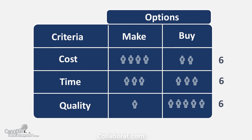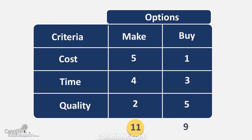Voting involves asking each team member to cast their vote for each of those options, like we do in elections — but here we do it for each criteria. With rating, the team members deliberate, debate, and give their consensus rating — such as on a scale of one to five — for each option against each criteria.